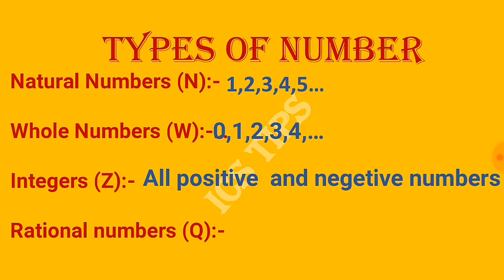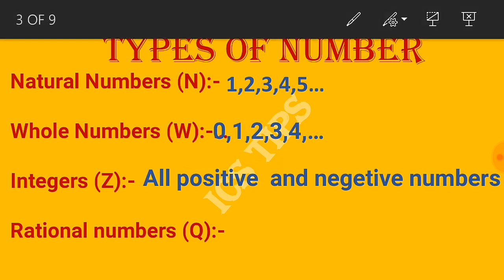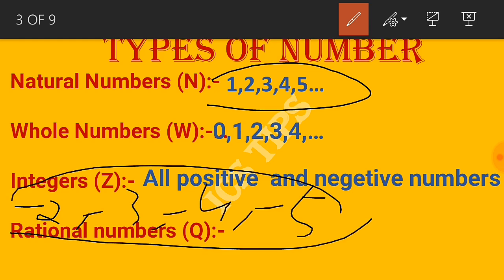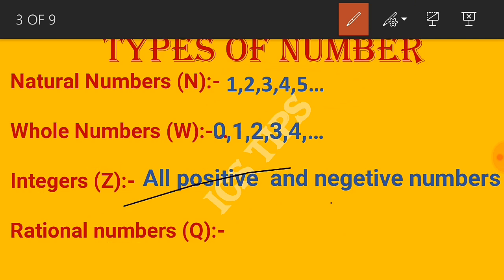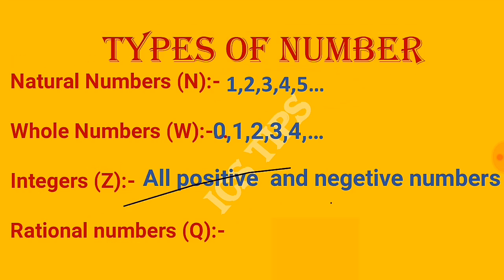Integers include all positive and negative numbers: positive numbers like 1, 2, 3, 4, 5 and negative numbers like -1, -2, -3, -4, -5, along with zero.